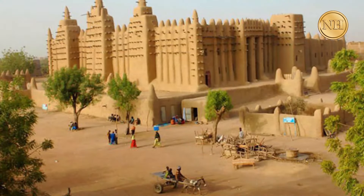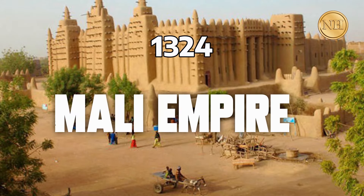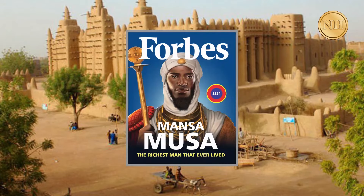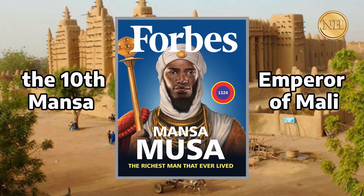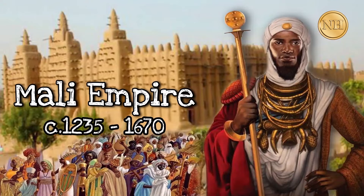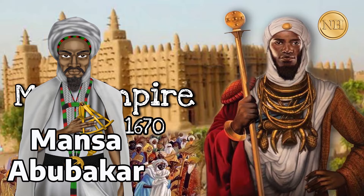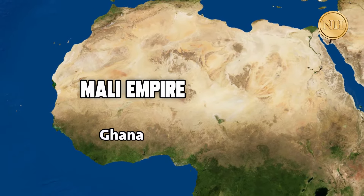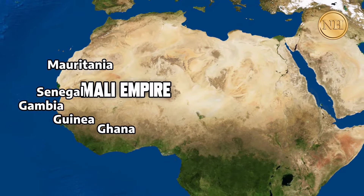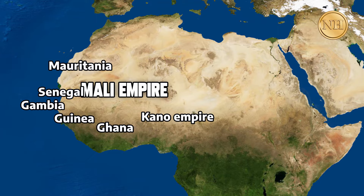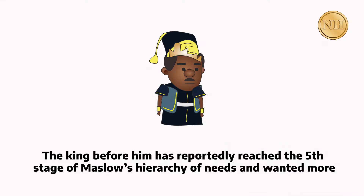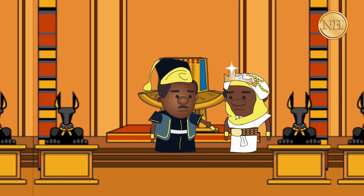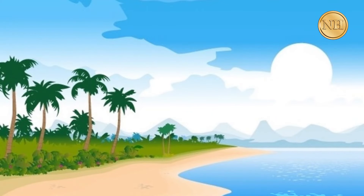One powerful kingdom in those times — around 1324 — was the Mali Empire, where the richest man who ever lived ruled. His name was Mansa Musa, the 10th Mansa or Emperor of Mali. Mansa Musa had a brother named Mansa Abubakar. Before he became king, the Mali Empire extended up to current-day Ghana, Guinea, Senegal, Mauritania, and Gambia. Some historians say it also consisted of the Kano Empire in modern-day Nigeria. The king before him reportedly handed Musa the kingdom and went on an expedition to explore the Atlantic Ocean but never returned.